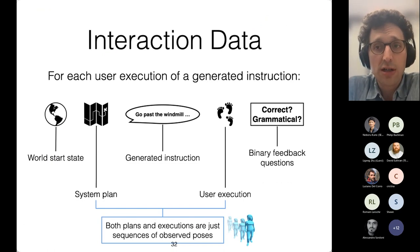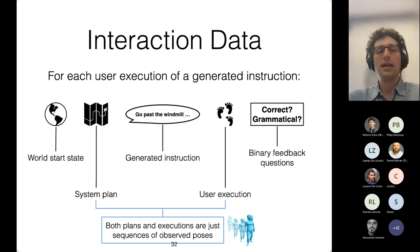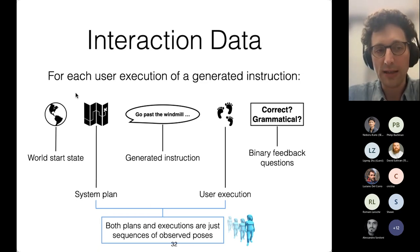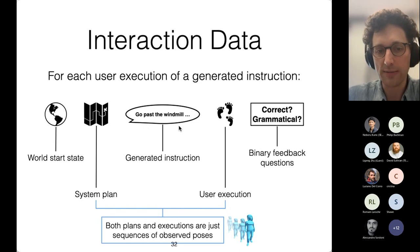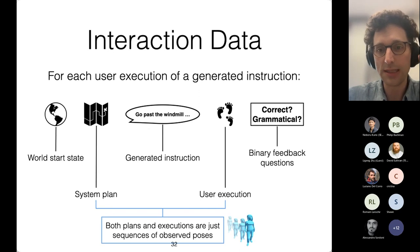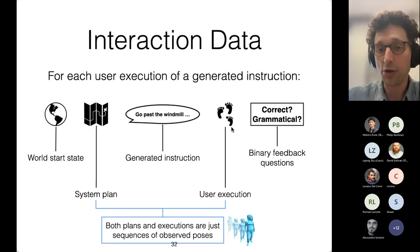This kind of interaction gives us tuples of five elements for each instruction execution: the world state from the leader's perspective when the instruction is given, the system plan, the generated instruction as output, the user execution in the environment, and the answers to our binary questions — perceived correctness and grammaticality. The system plan and user execution are both in the same simple format: sequences of poses in the environment.